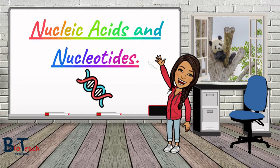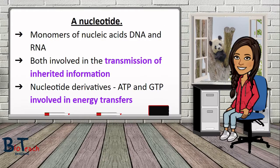Hi everyone and welcome back to BioTeach, this time covering nucleic acids and nucleotides. This information is relevant for A-level biology for all exam boards as well as BTEC Applied Science Unit 10 which looks at biological molecules. The first thing we need to understand is the monomers of nucleic acids — they're called nucleotides, and many nucleotides bonded together will form molecules like DNA and RNA, both of which are involved in the transmission of inherited information.